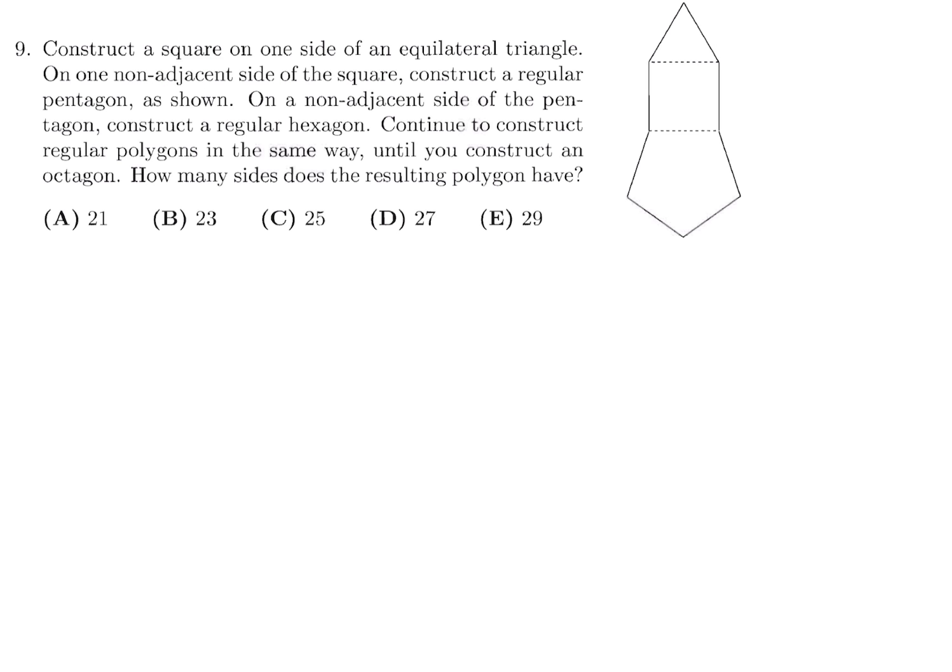Construct a square on one side of an equilateral triangle. On one non-adjacent side of the square, construct a regular pentagon, as shown. On a non-adjacent side of the pentagon, construct a regular hexagon. Continue to construct regular polygons in the same way until you construct an octagon. How many sides does the resulting polygon have? So basically what they're saying is that once you get to this point, the next shape you're going to draw is a hexagon. So I'll draw that in. So there you go. There's my hexagon. And then on this hexagon, I have to draw another polygon. So I'll do that. And the next one is going to be a seven-sided polygon. And then now we have to finally construct the octagon, which is eight-sided, so I'll do that.